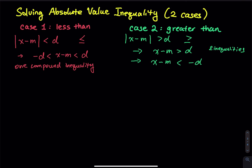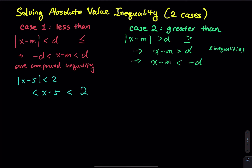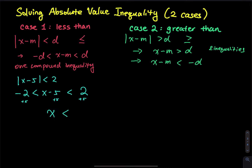Let's take a look at case 1 starting with the easiest example. We have the absolute value of x minus 5 less than 2. Since the less than is facing the absolute value, we put this into a compound inequality: x minus 5 is between negative 2 and 2. Then we isolate x in the middle by adding 5 on each side. x minus 5 plus 5 gives x, and 2 plus 5 and negative 2 plus 5 give us our bounds.